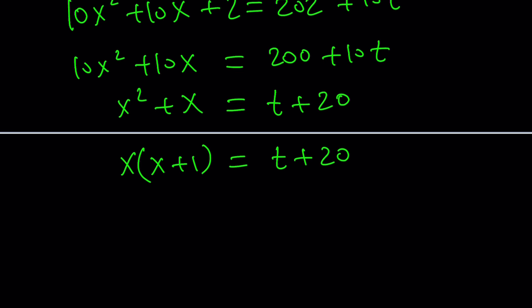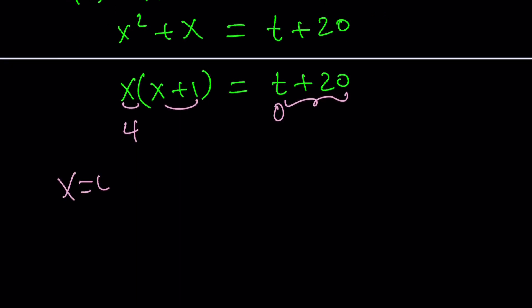How am I going to find the x or t values? Because I have two variables, right? Well, at this point, I think it's okay to do a little bit of trial and error. Can I get a number greater than or equal to 20 by multiplying two consecutive integers? 3 times 4 is 12. It's not going to work. 4 times 5 is 20. So t can be 0. Is that going to work? Absolutely. So x equals 4, t equals 0, definitely works.